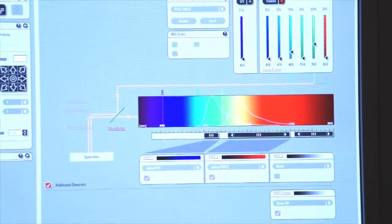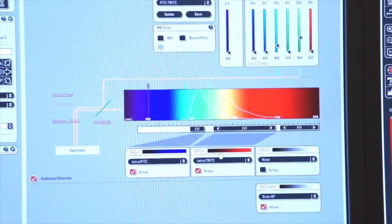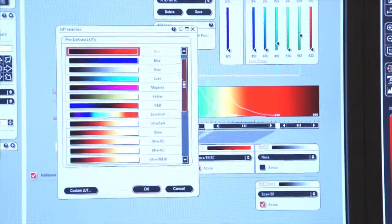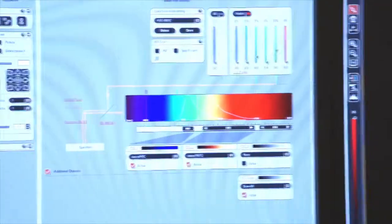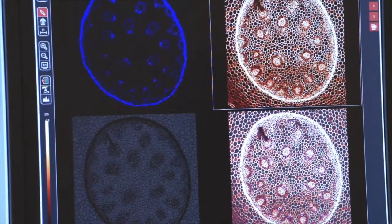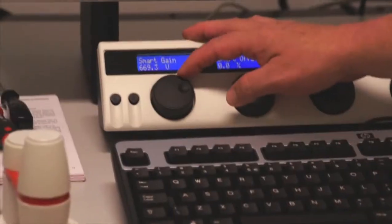Now if I want to change the color output on the red, I go to stop. I click on the red and let's make this one glow dark. Click OK. Now if I click on live, you can see that I have a completely different image. And I can control this again with my smart gain and my offset.